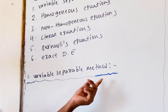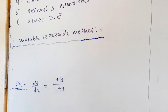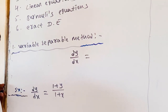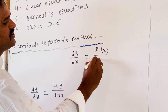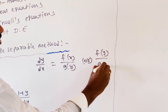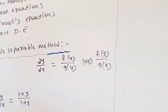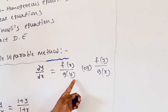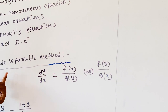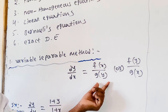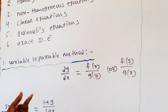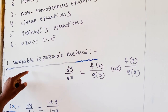First of all, we are discussing about the variable separable method. A differential equation in the form dy/dx = f(x)/g(y) or f(y)/g(x) can be solved by separating the x terms and y terms individually to LHS and RHS, then integrating the differential equation to get the solution.